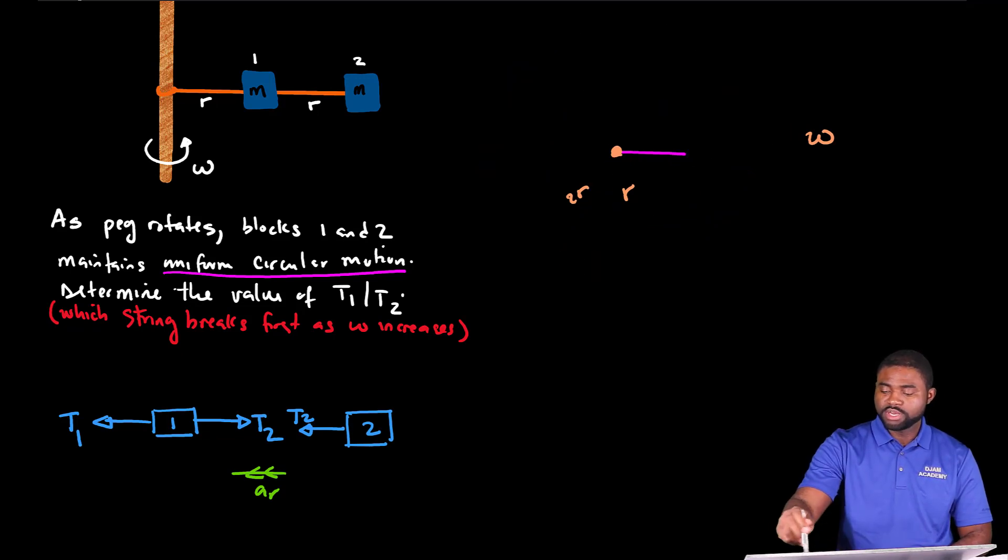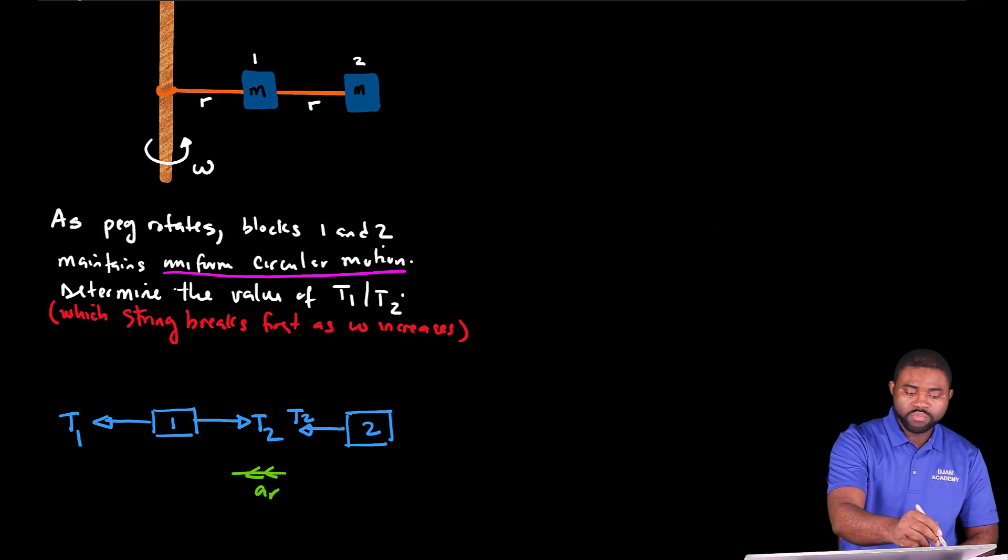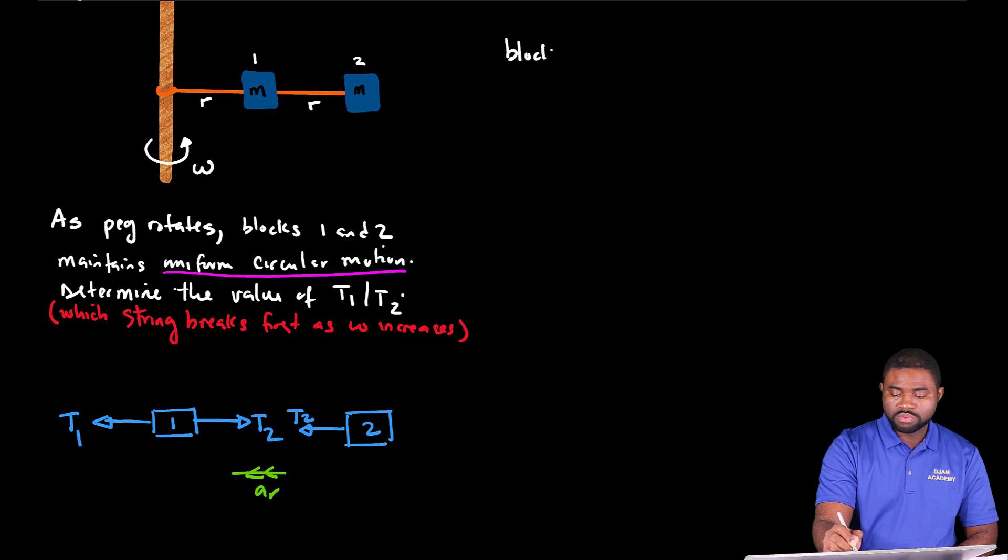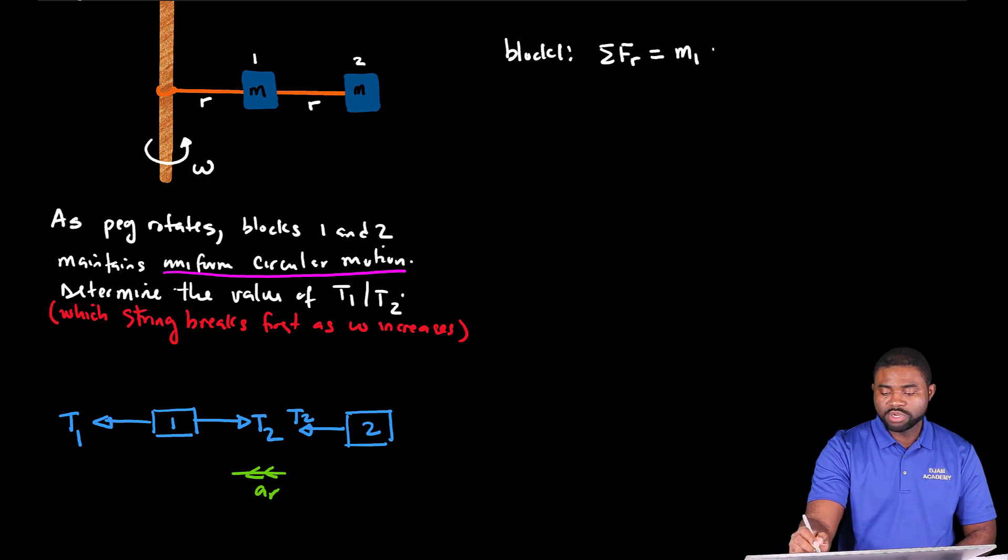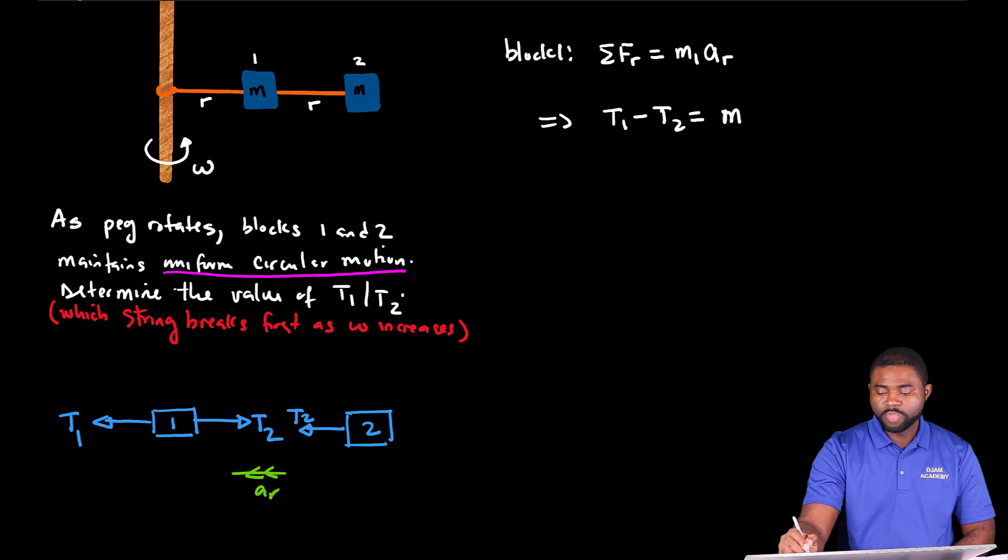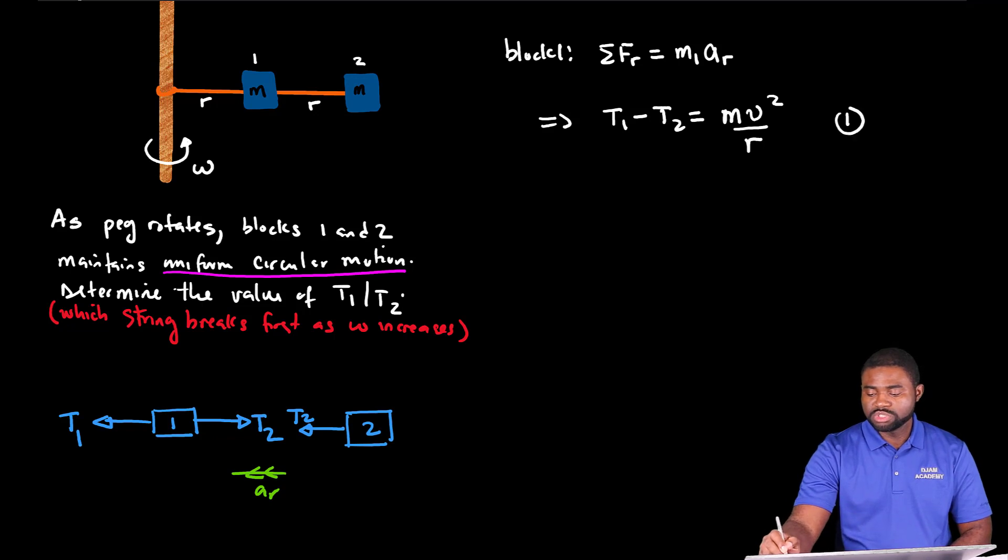So what that implies is we are going to apply Newton's second law for block one and Newton's second law for block two separately. If we do that, we will end up with this. For block one, we know that the summation of FR is equal to M1 AR. So this means that T1 minus T2 is equal to MV squared divided by R. Let's call this equation one.